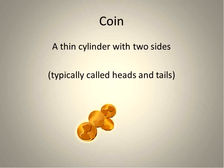Also, a coin is just a thin cylinder with two sides, typically heads and a tail. So usually you have a 50-50 shot, 50% one, 50% the other.